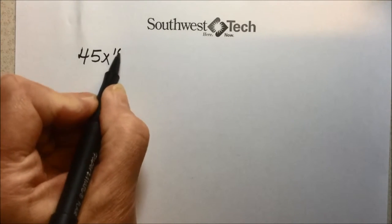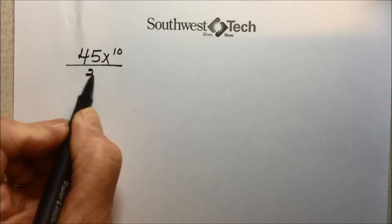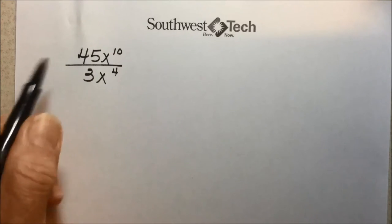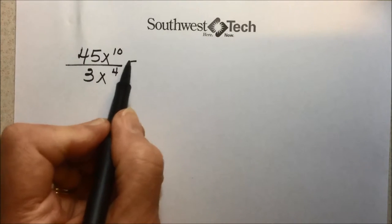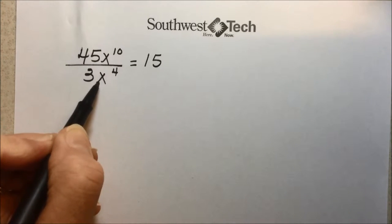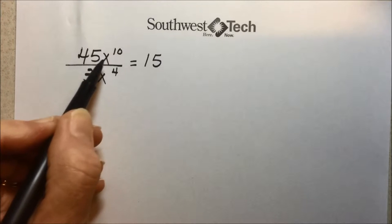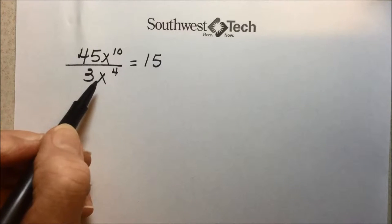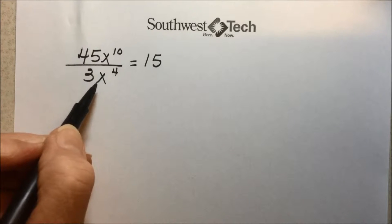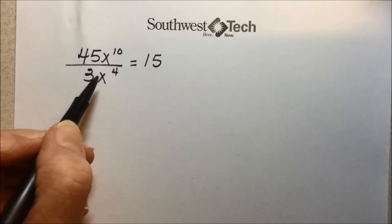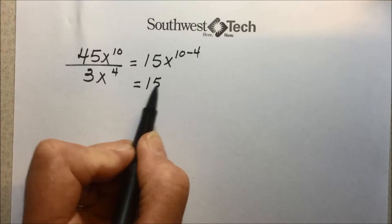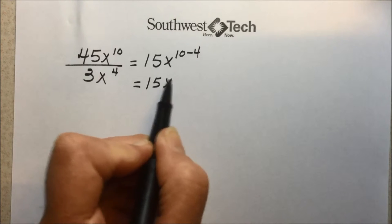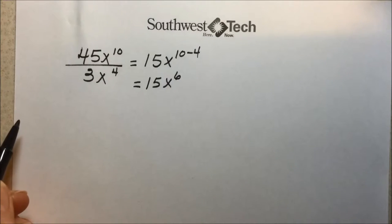Say 45x to the tenth divided by 3x to the fourth power. We have a monomial divided by a monomial. To simplify this, we divide the coefficients—45 divided by 3 is 15—and if the bases are similar, using laws of exponents, we subtract the exponents. So x to the tenth divided by x to the fourth is x to the tenth minus fourth power, which gives us 15 times x to the sixth power.